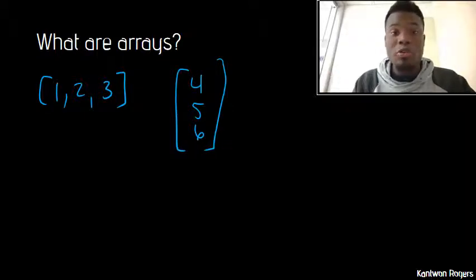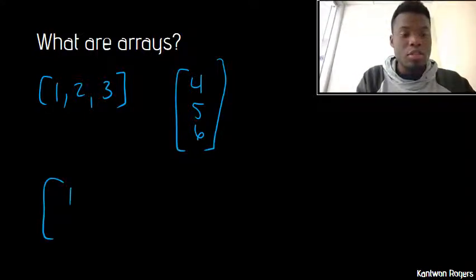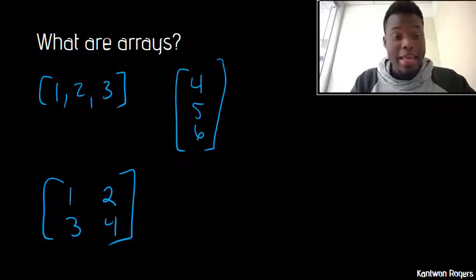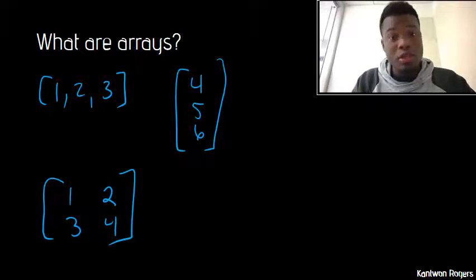Now when we talk about arrays, we're going to be talking about entities that have multiple rows and multiple columns. They'll look something like this. This array has two rows and two columns.